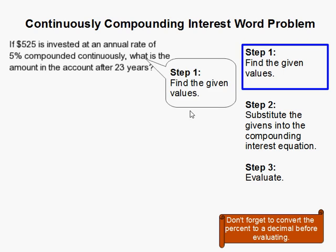Step one is to find the given values. You need to find the interest rate, which is 5%. Take note if it's annual or monthly. Next is the principal, which I'll denote with P—that's the starting value of $525.